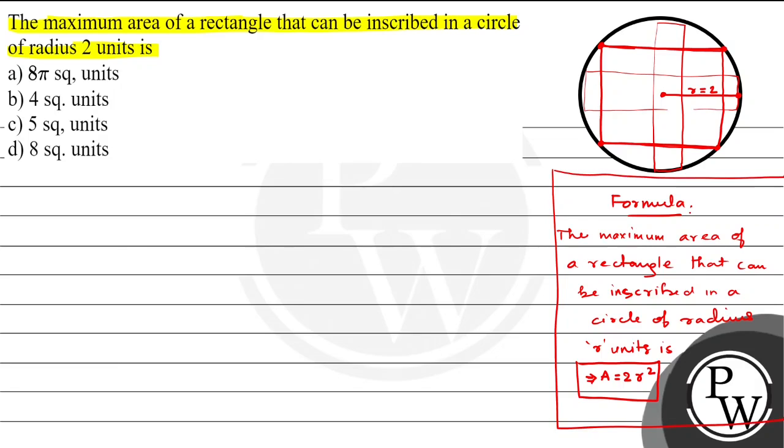So using this formula, we can solve the question directly. Given that the radius is provided, therefore the maximum area formula is A = 2r², which applies to our case of a rectangle inscribed in a circle.